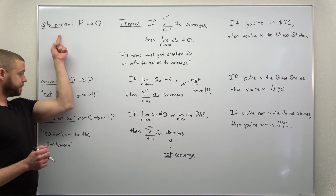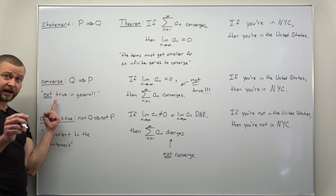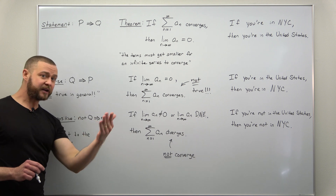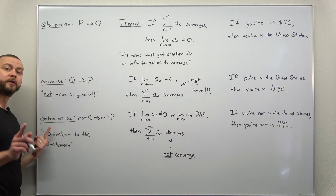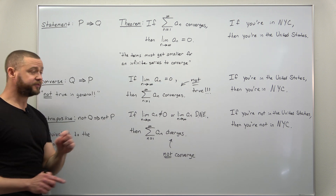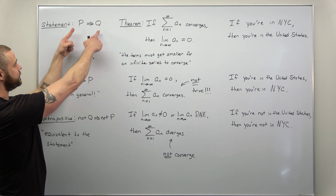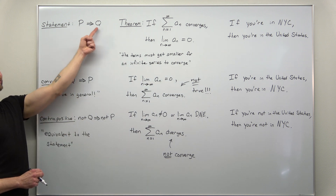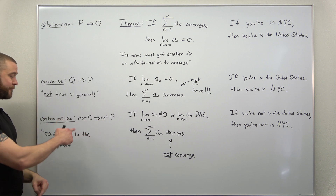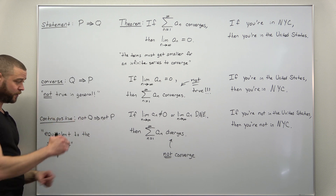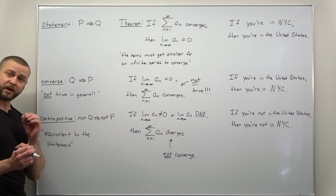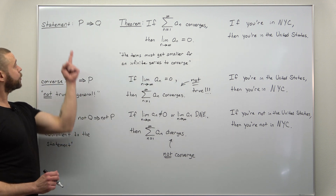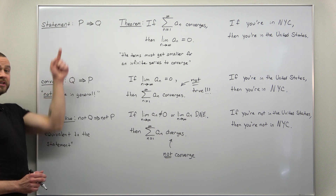So we have our original statement and the converse, which is not true in general. There is, however, an equivalent version called the contrapositive. The contrapositive takes the conditions and conclusion, switches them, and negates them. Instead of p implies q, we get not-q implies not-p. Importantly, the original statement and its contrapositive are logically equivalent — they say the same thing.